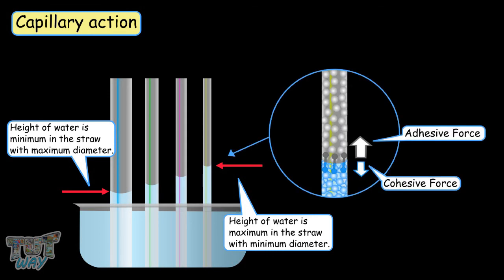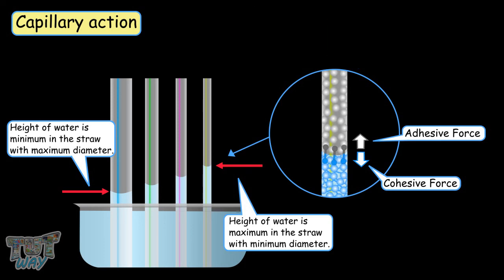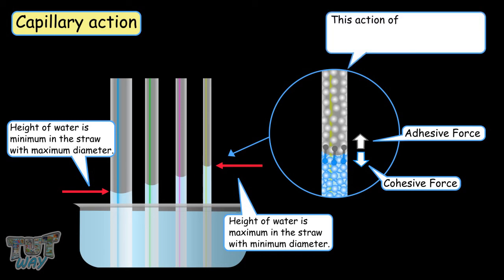The thinner the straw, the less water will be there in the straw. As a result, the weaker the cohesion bonds will be. So it will be easier for the adhesion bonds to pull up the water, as the adhesion to cohesion ratio will be more in the case of thinner straws. This is why water travels up more in the case of thinner straws, and this action of water moving up or capillary action is also called wicking.